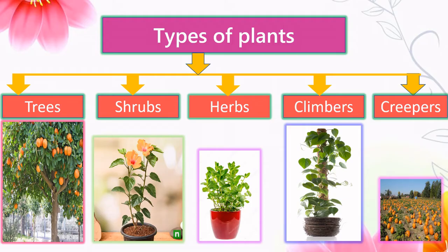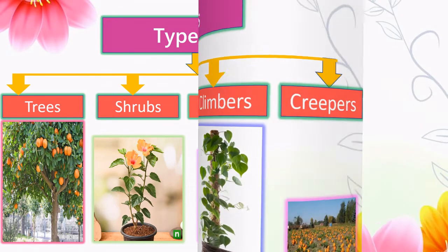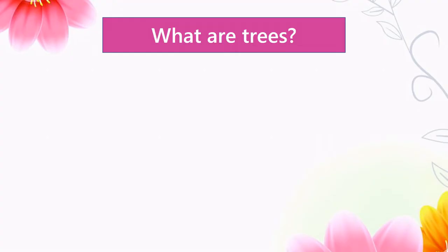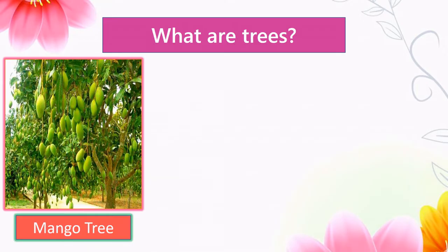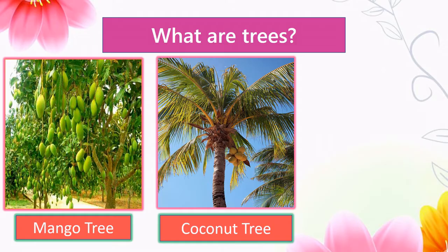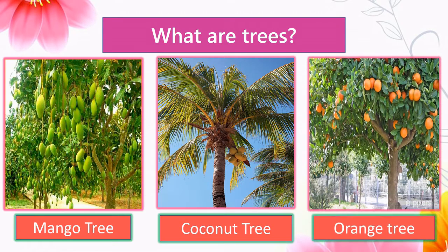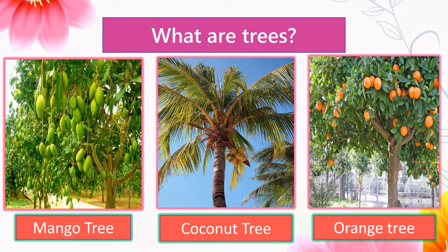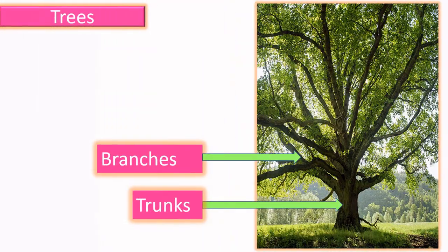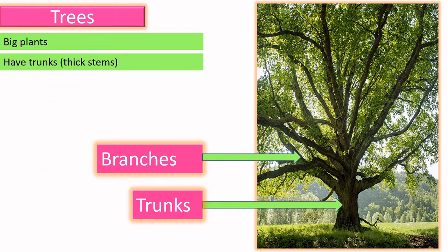What are trees? Let us see some examples: mango tree, coconut tree, orange tree. Trees are big plants and they have trunks and big branches.